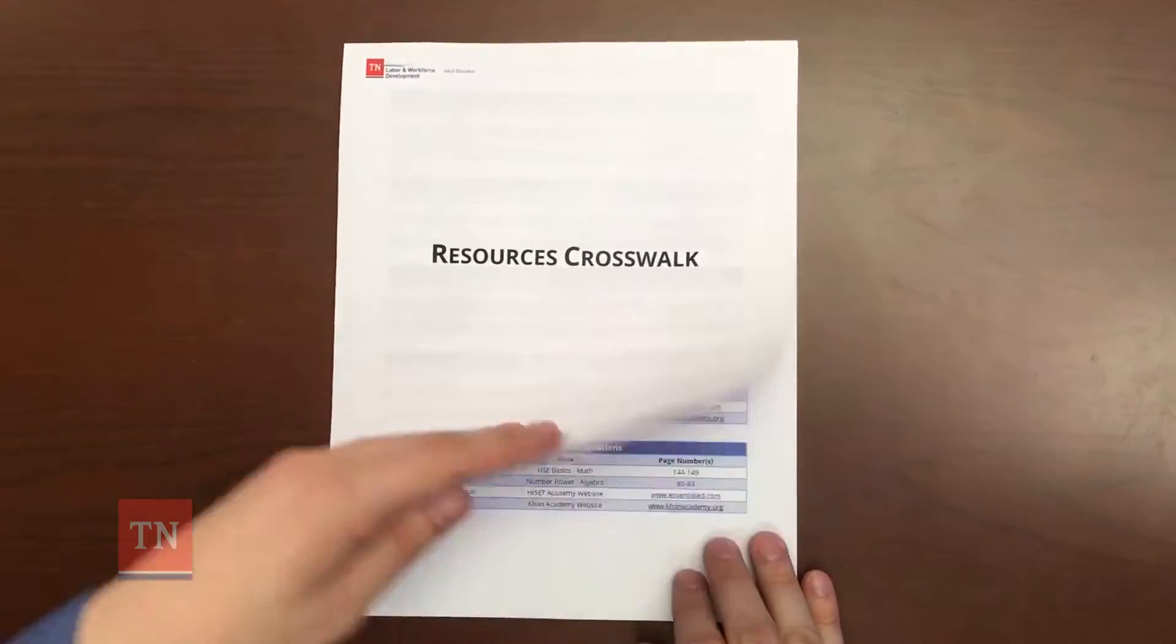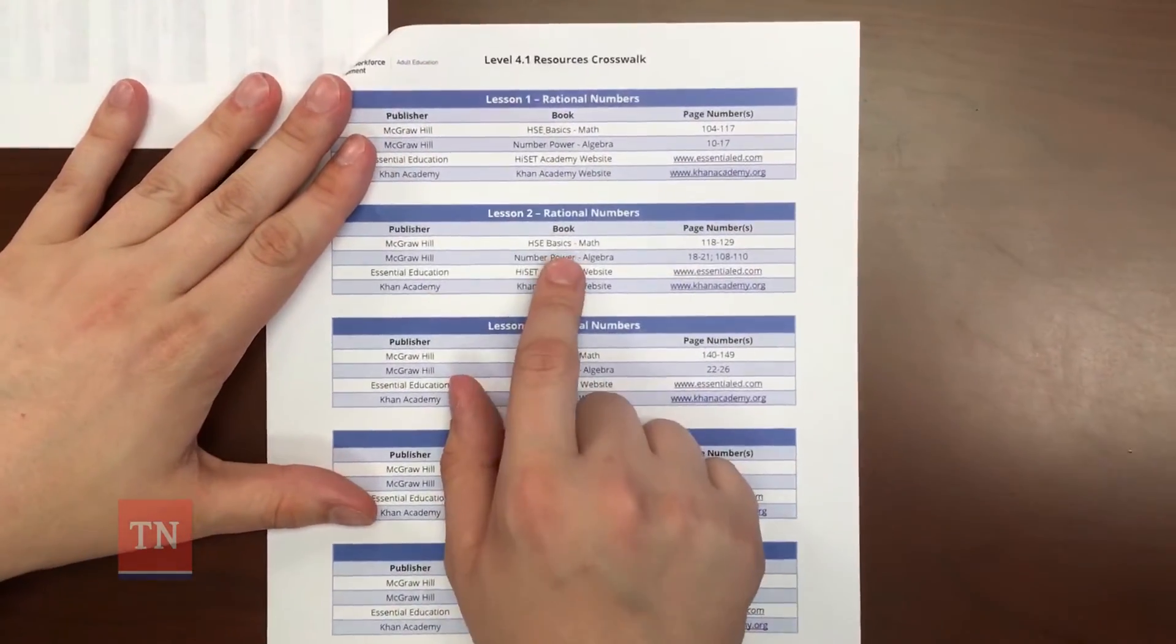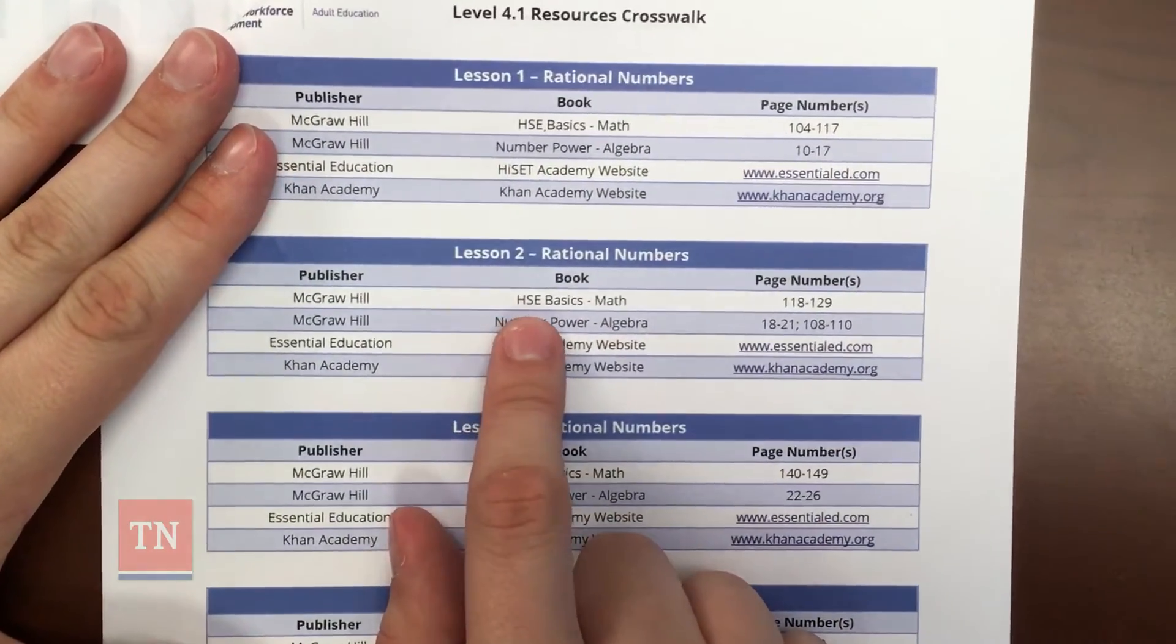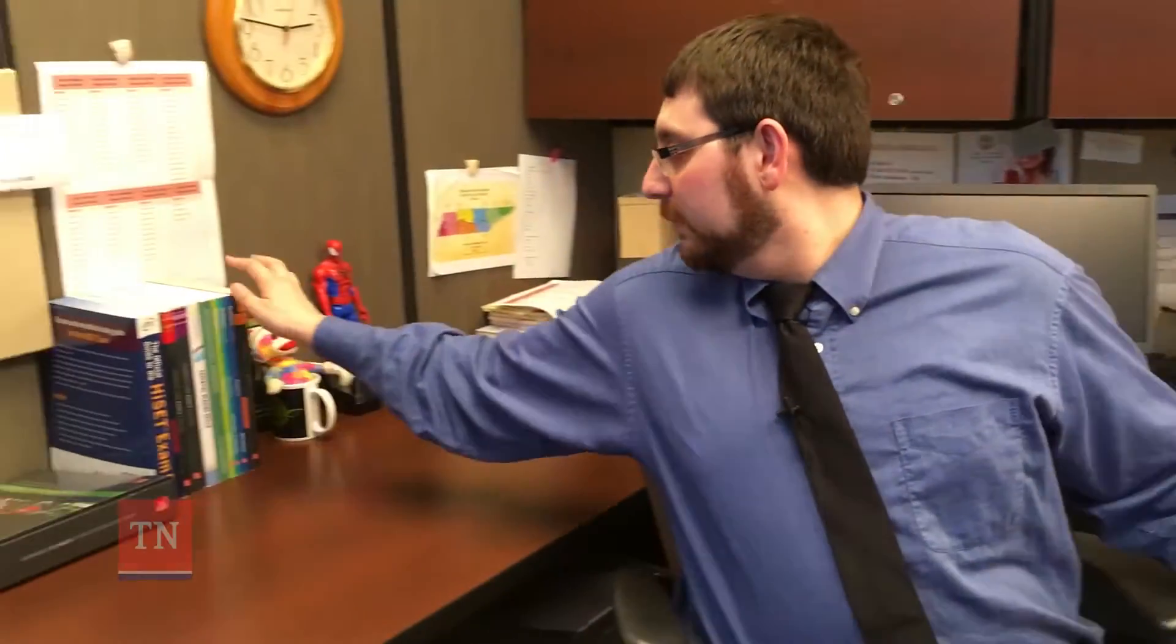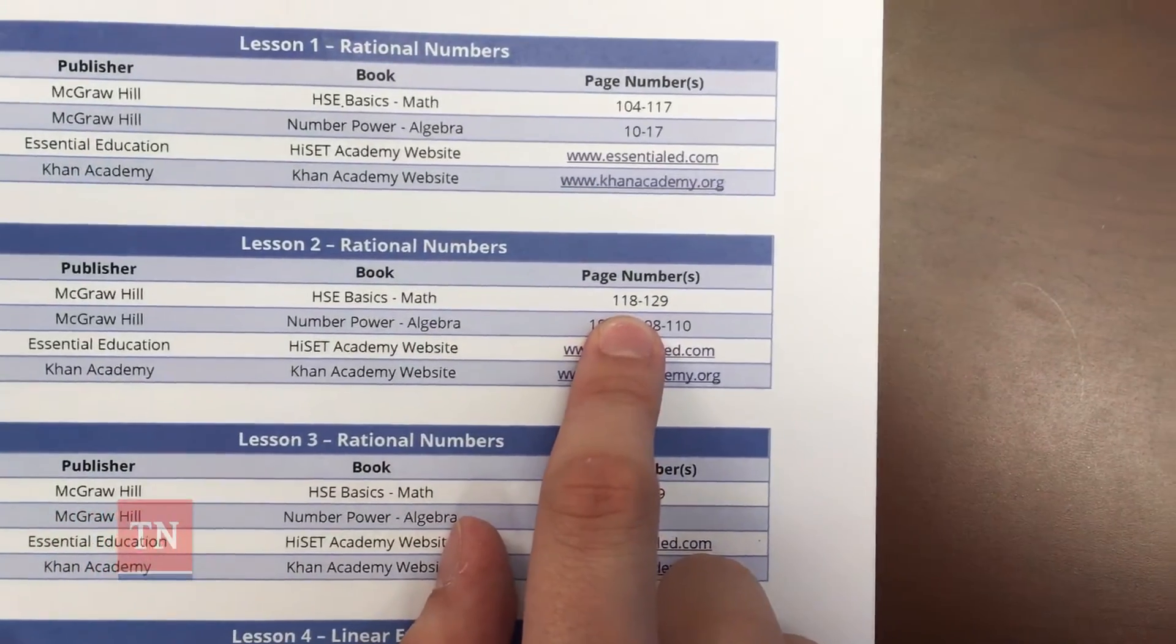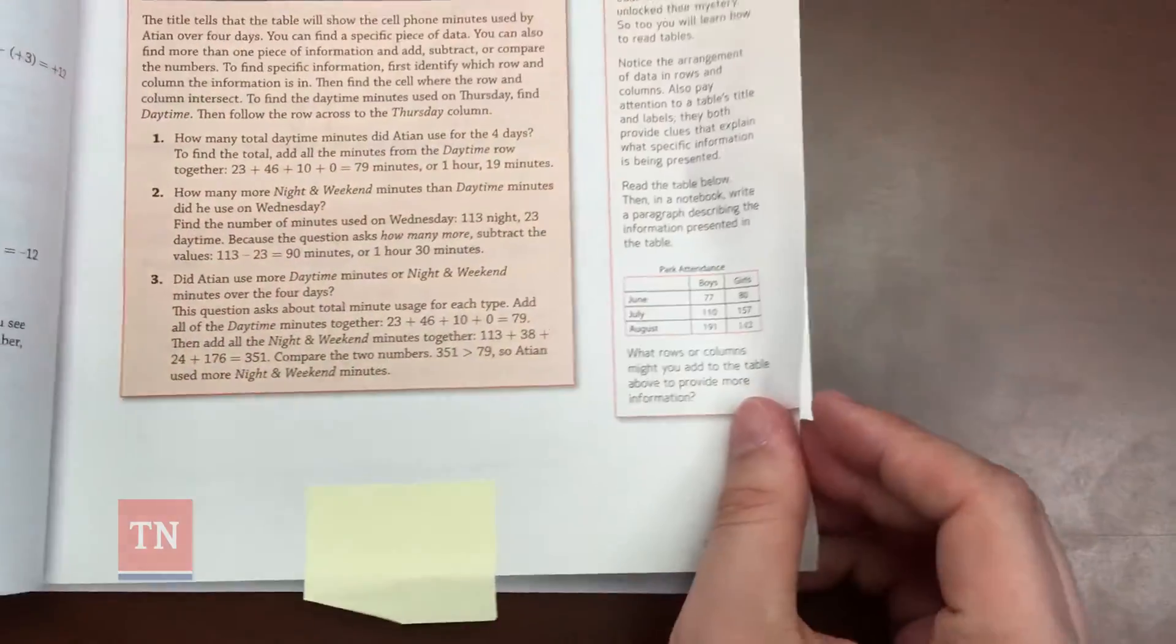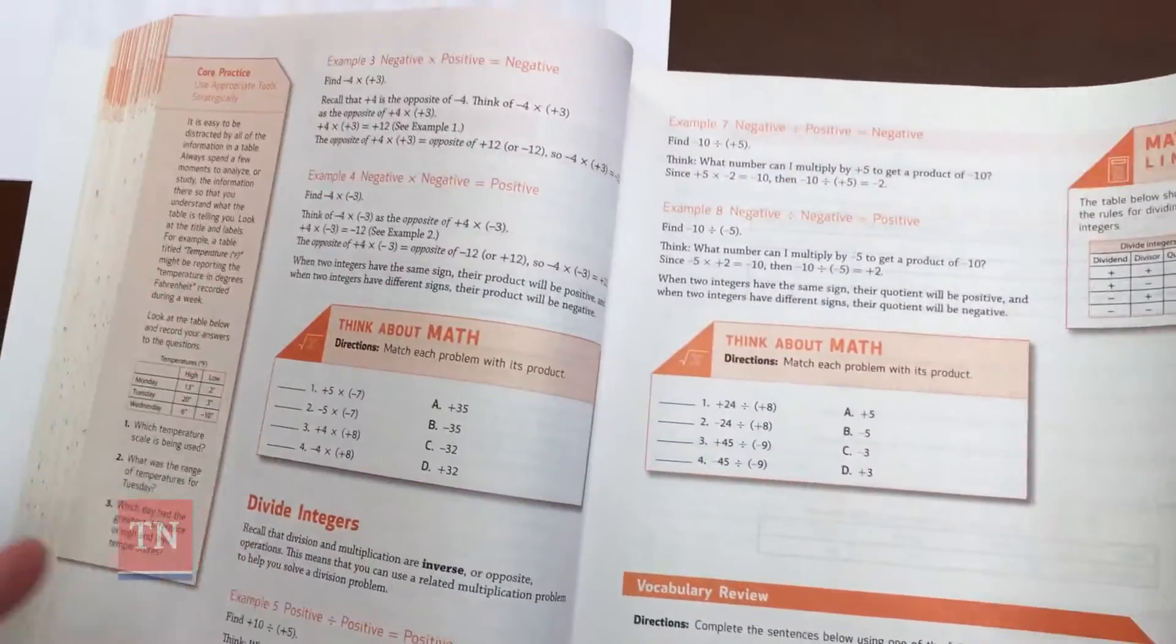For the most part, you should use the resources listed in the resources crosswalk. Since I am teaching level 4.1 lesson 2, I need to find that lesson in the crosswalk. One of the resources listed here is the High School Equivalency Basics Math book, which is perfect because that book has never let me down. High School Equivalency Basics or HSE Basics usually serves as the foundation of my teaching of level 4 students. The crosswalk shows that for this specific lesson, I can go to HSE Basics Math book pages 118 through 129.